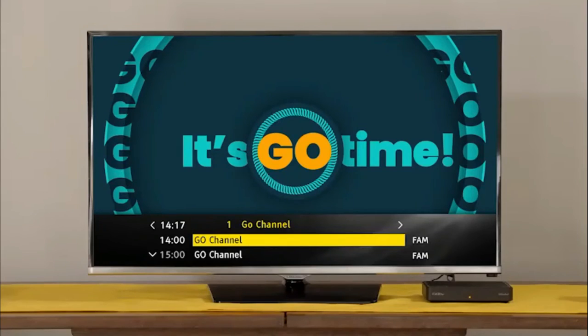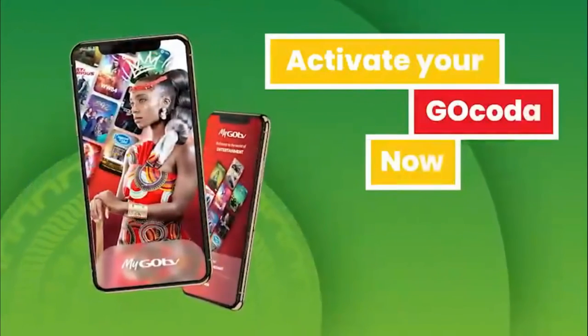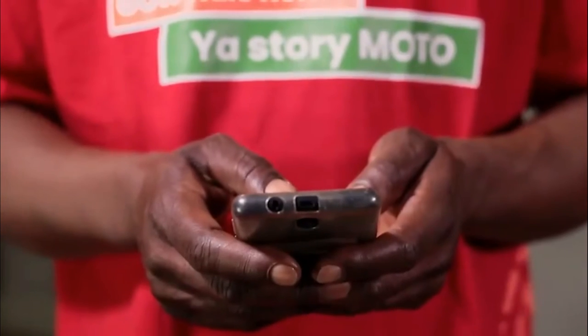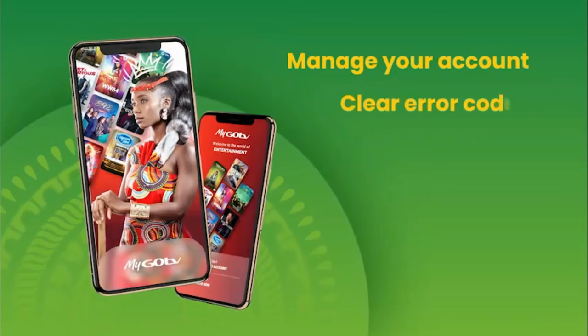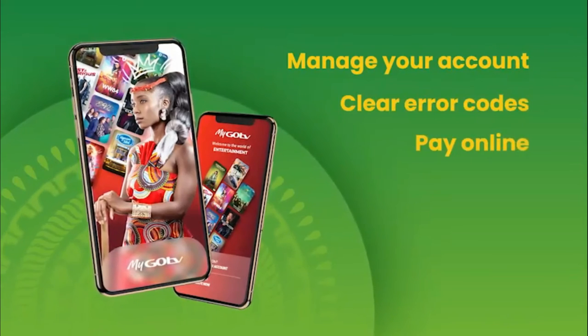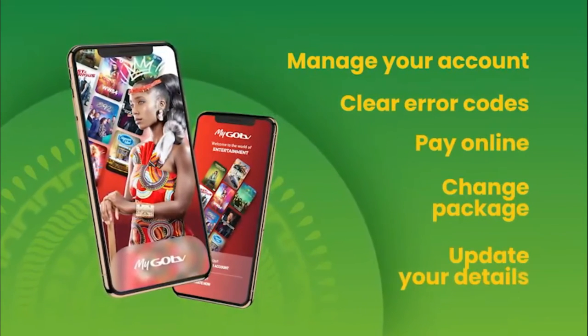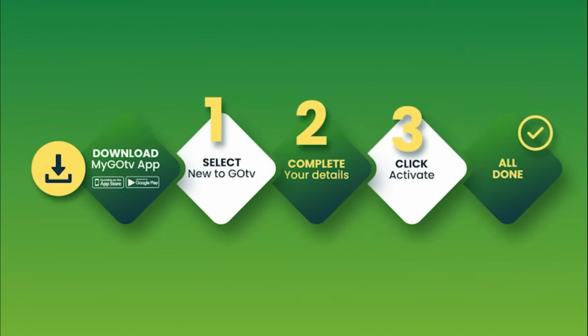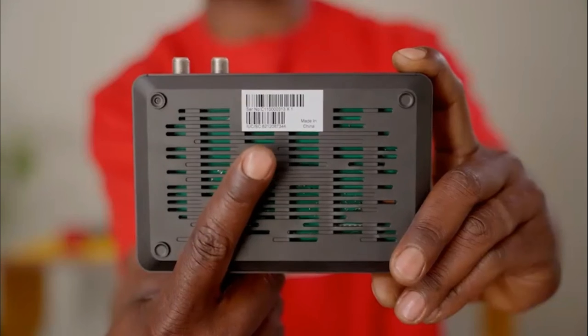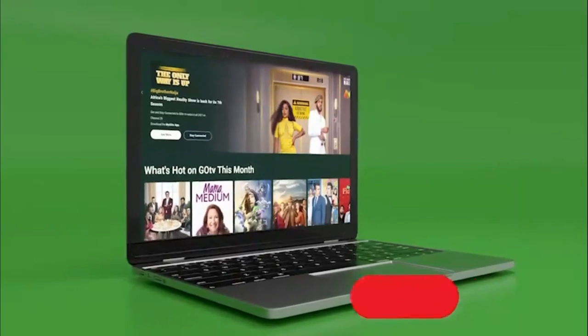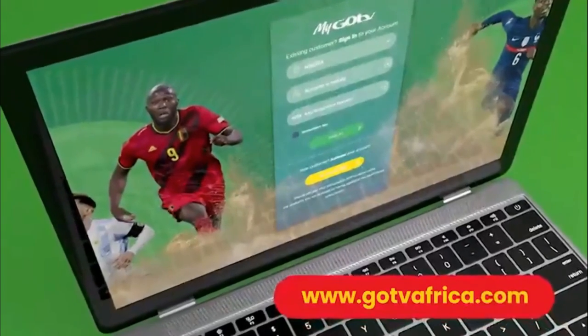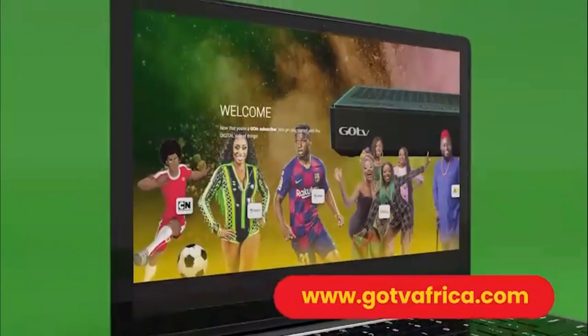This indicates you have successfully installed your GoCoder. You can now activate your account by using the MyGoTV app on your smartphone. The MyGoTV app is an easy and convenient way to manage your GoTV account, clear error codes, pay online, change package, and update your details, all from one place. Once you have downloaded the MyGoTV app, follow the easy steps. Remember to have your 10-digit IUC number handy. It is underneath your GoCoder. You can also visit gotviafrica.com for full details on how to activate your GoCoder.